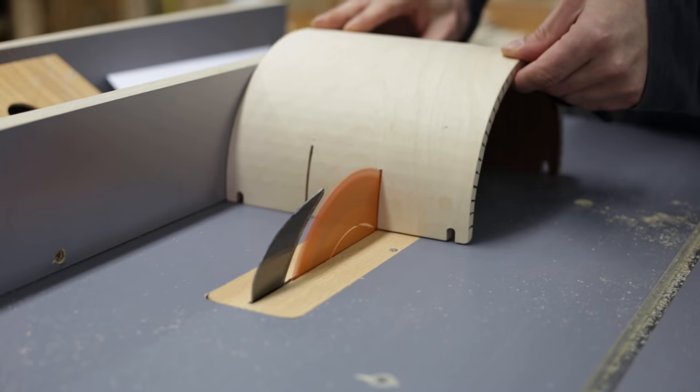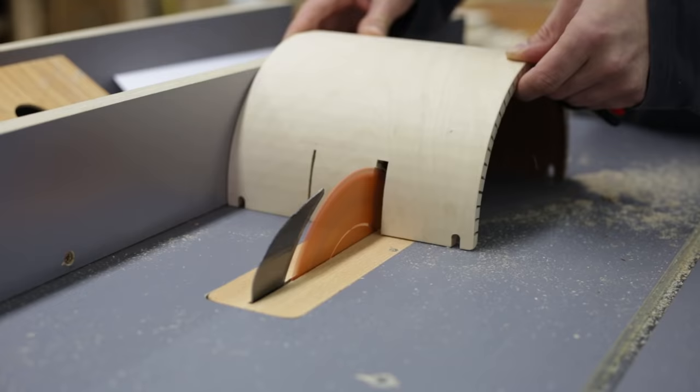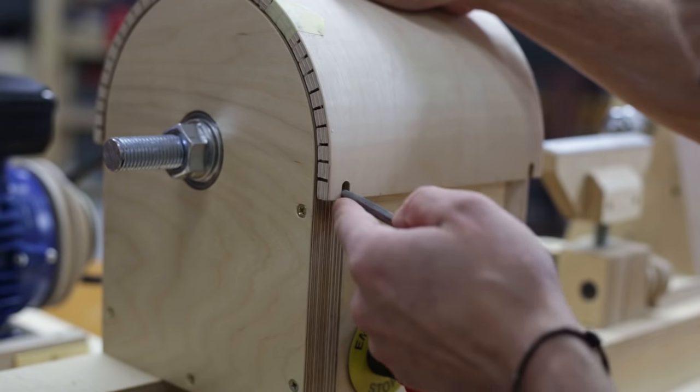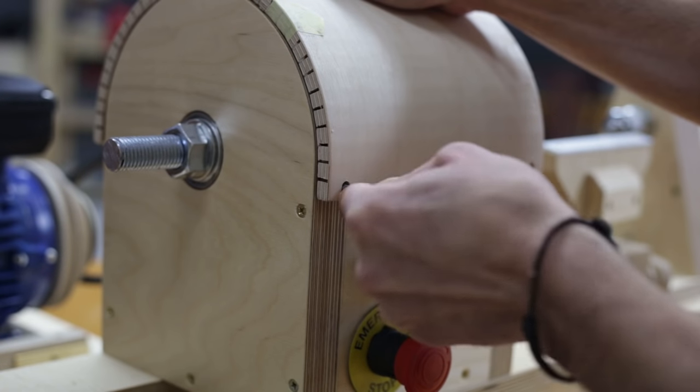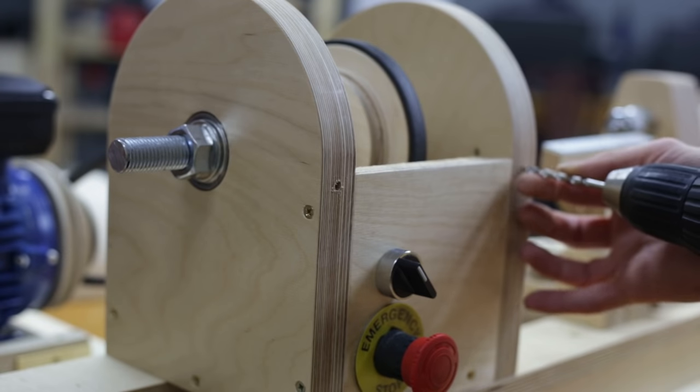I cut this hole for the belt with a table saw. Now I mark the positions of the screws and drill them. I'll use a bit 0.5mm smaller than the screws.